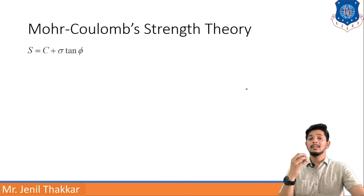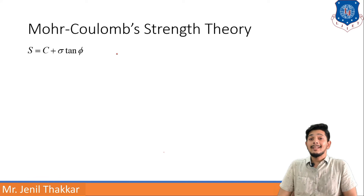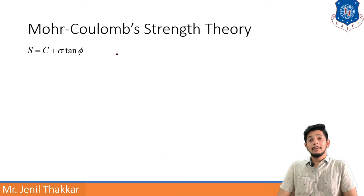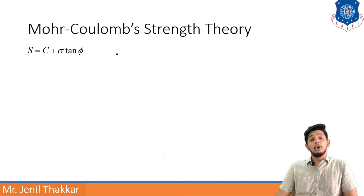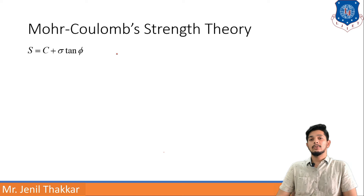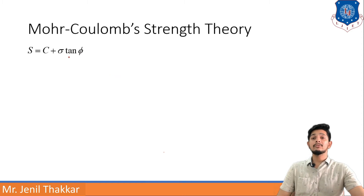Let us move to Mohr-Coulomb Strength Theory. In his investigations, Coulomb found that at the time of failure, the shearing strength of soil is divided into two components. The first component is independent of applied normal stresses and is called intrinsic or apparent cohesion. The second component, frictional resistance, is dependent on the normal stress applied to the soil.